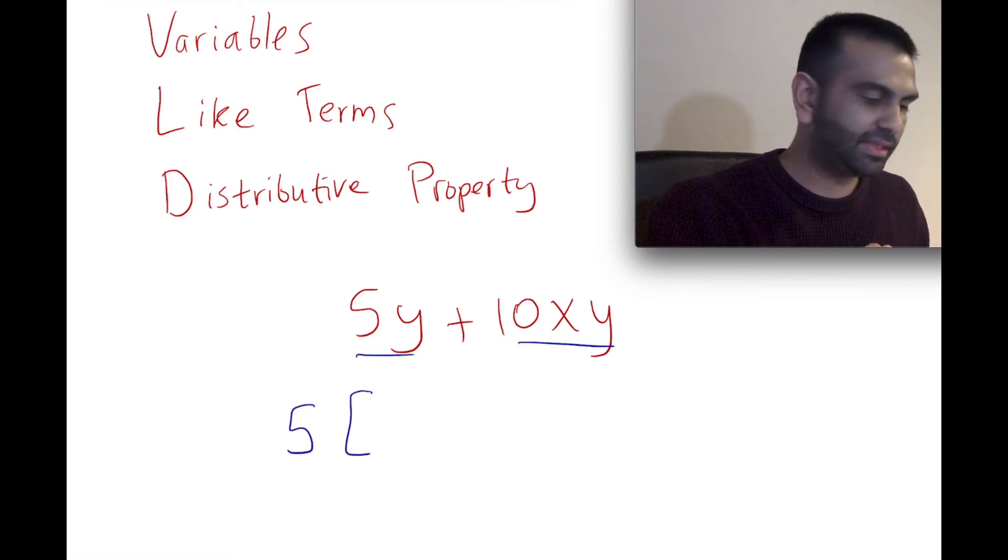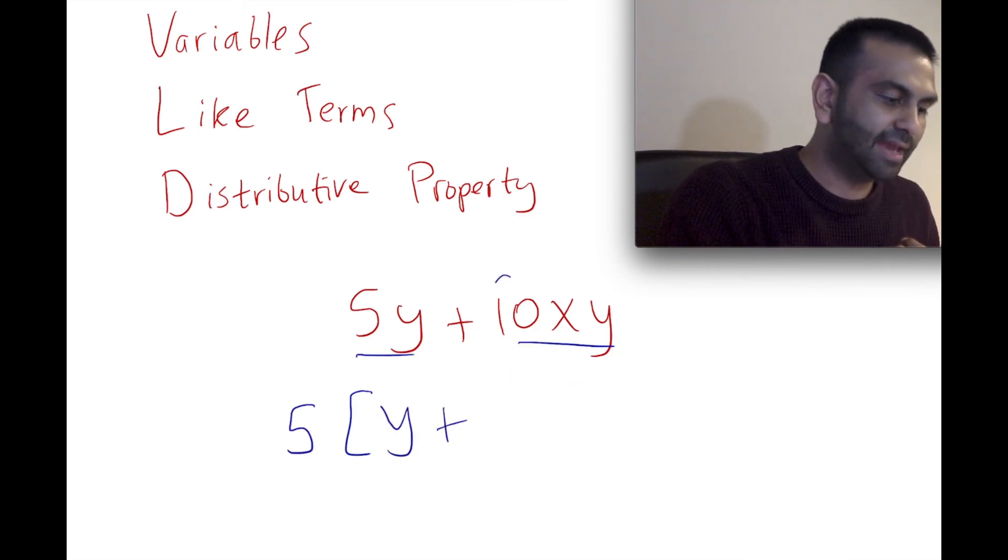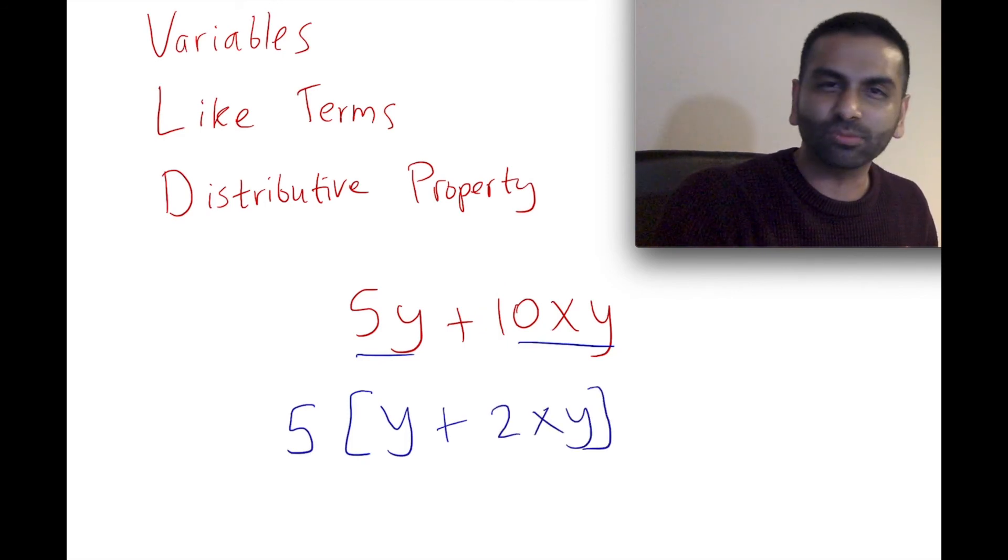What we're left with: in this first term you're basically dividing this 5 by 5, so you're left with just 1, so that's just 1Y, which you could also just write as Y. And then here, this 10 divided by 5 is 2, so this would be 2, and then you're also left with this XY.